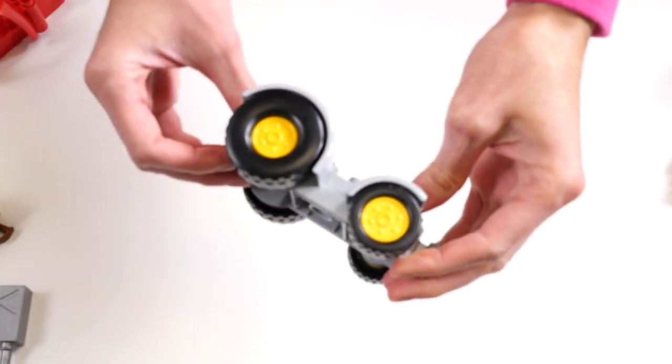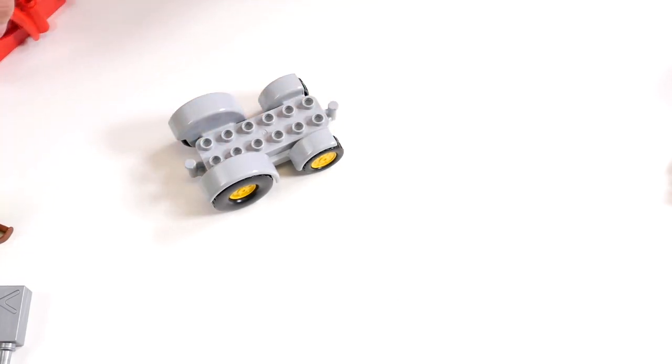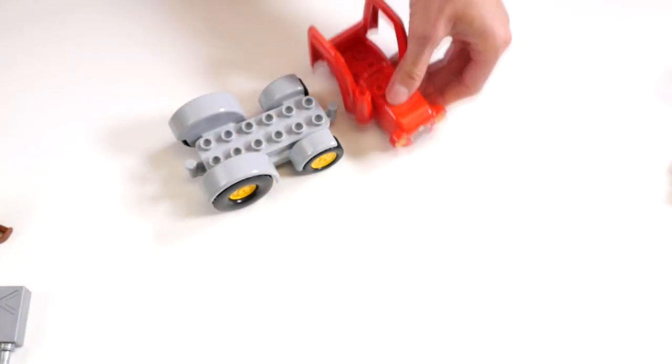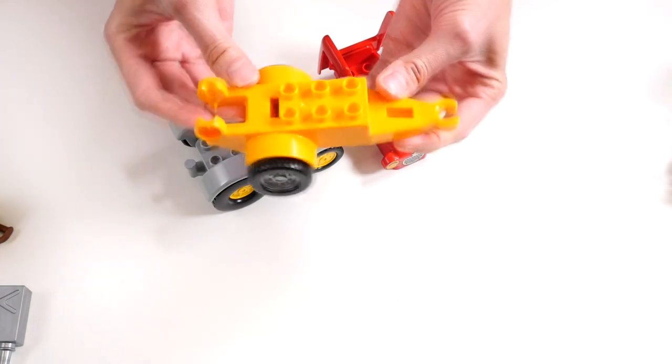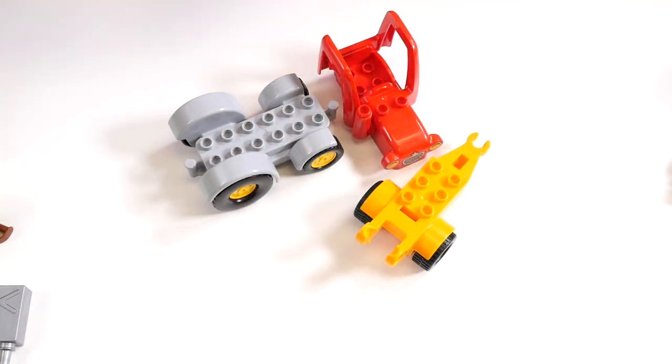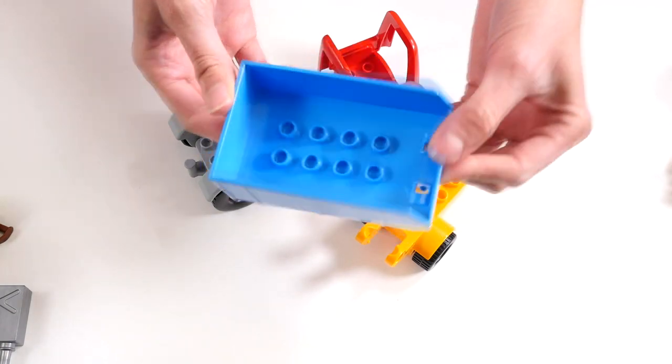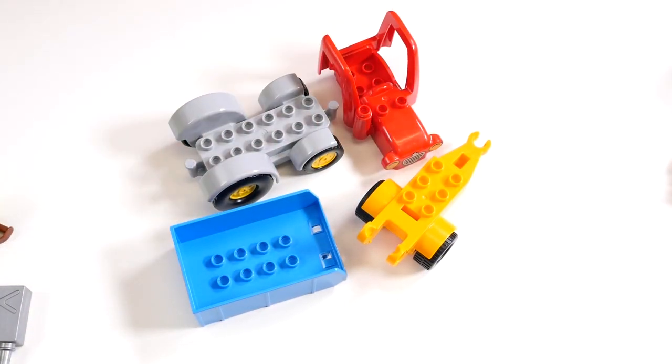These are the wheels for the tractor. This is the cabin for the tractor. And this is the hitch for the tractor. And this is the trailer part that goes on the hitch for the tractor. Let's build it together.